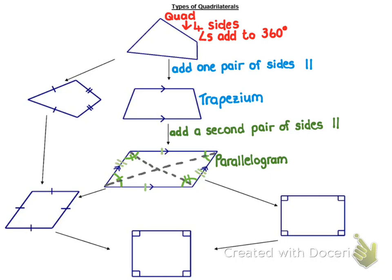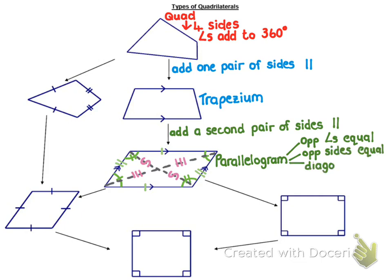Thirdly, a parallelogram has diagonals. As you can see from this picture, the diagonals of a parallelogram are not necessarily equal, because a parallelogram generally lies on its side, giving you a shorter diagonal and a longer diagonal. But what is important about these diagonals is that they bisect each other — they cut each other in half, so each diagonal is cut perfectly in half. So the new properties are: opposite angles are equal, opposite sides are equal, and diagonals bisect.